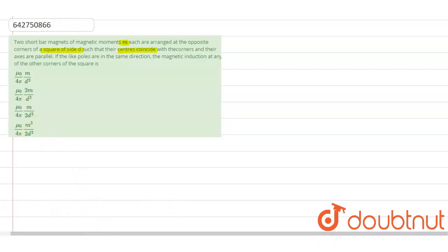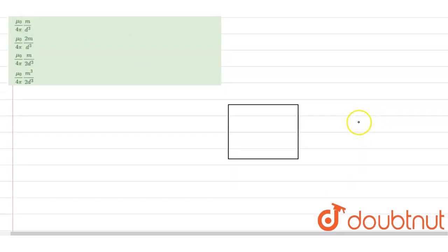So according to the question, let's make a square. First of all, let's say this is our square of side d, right. And this square at the corner of the squares there are bar magnets. So this is our bar magnet 1 and this is our bar magnet 2.